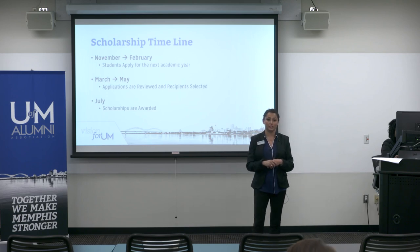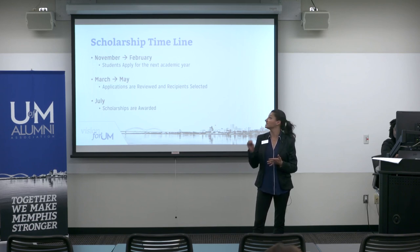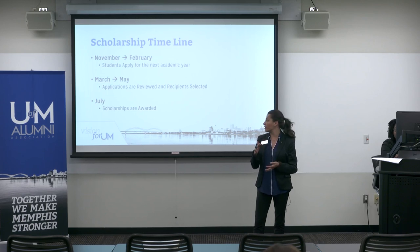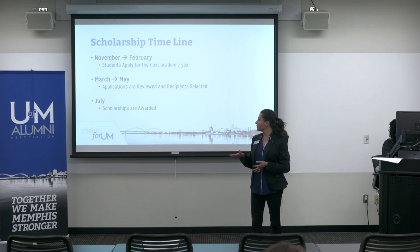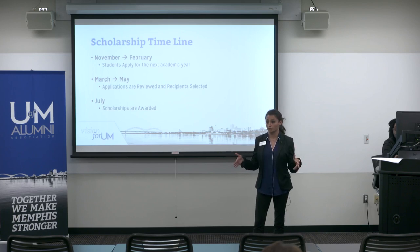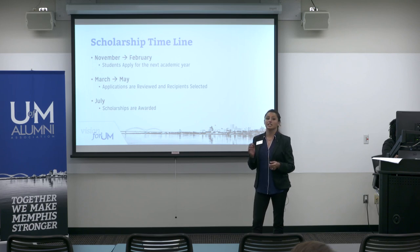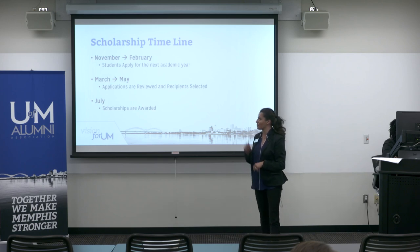The scholarship timeline works as follows: students apply between November and February for scholarships they will receive the following fall. For example, students applying November 2017 through February 2018 received scholarships in fall 2018. From March through May, the scholarship review committee gets access to Tiger Scholarship Manager, views all applicants for their scholarship, evaluates them, and selects recipients. In July, students begin to be awarded scholarship money, and then the process starts all over again in November.